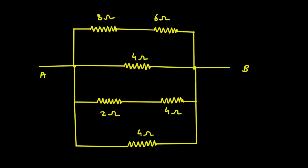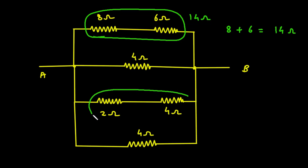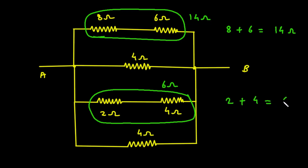Now we can clearly see this 8 ohm and this 6 ohm are connected in series, so it will simply be 14 ohm — that is 8 plus 6 equals 14 ohm. Then this 2 ohm and this 4 ohm are also connected in series, so it will simply be 6 ohm — that is 2 plus 4 equals 6 ohm.